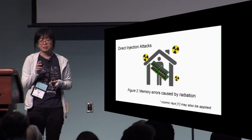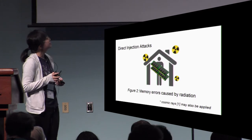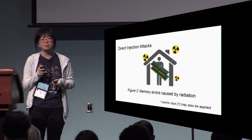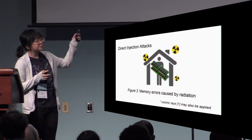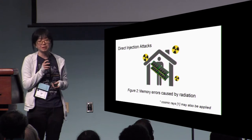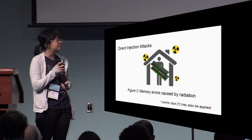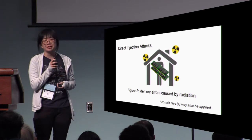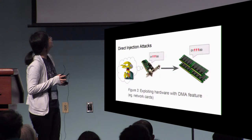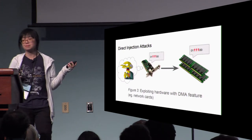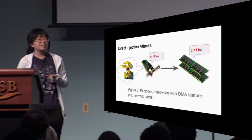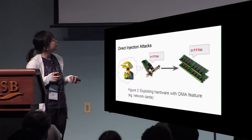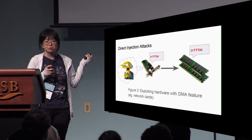Another scenario would be a nuclear fallout, which would cause some memory errors. And in one of the papers we read, cosmic rays were also recommended — not sure where you would get those. But probably the more realistic attack would be exploiting hardware that has the DMA feature, for example, network cards.